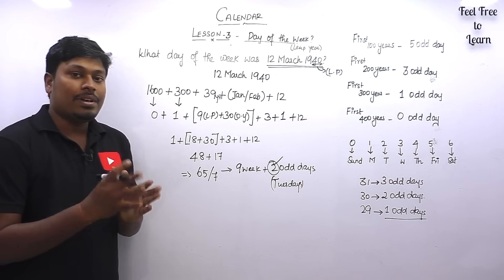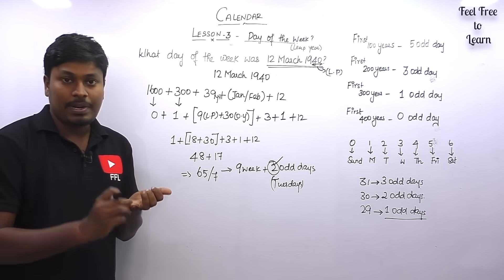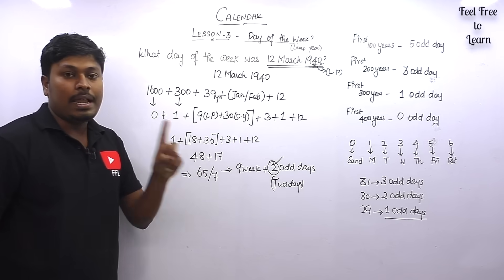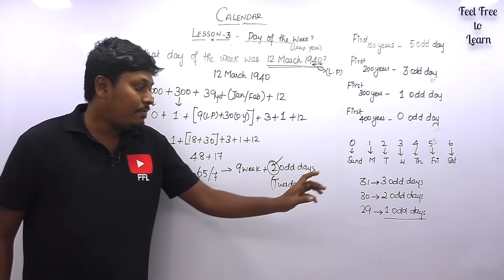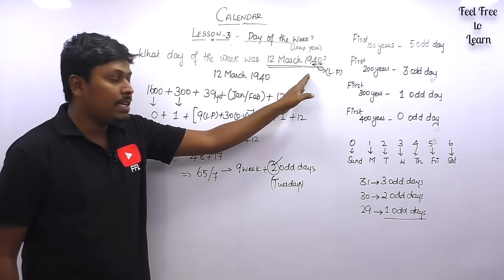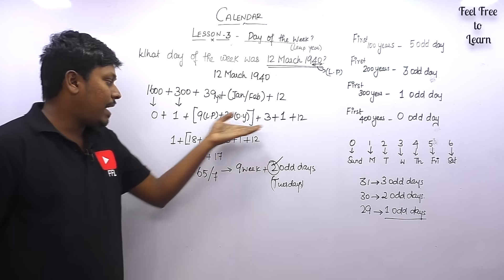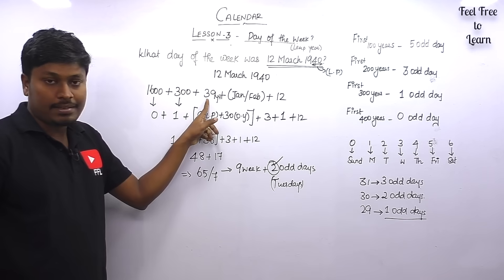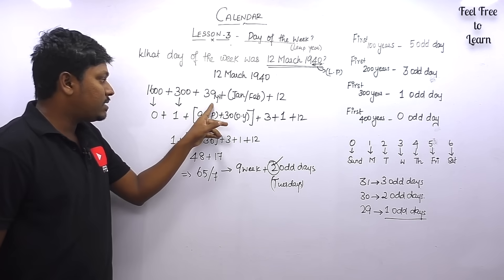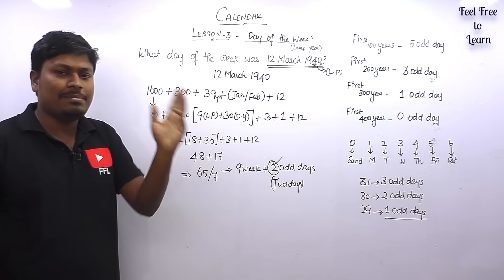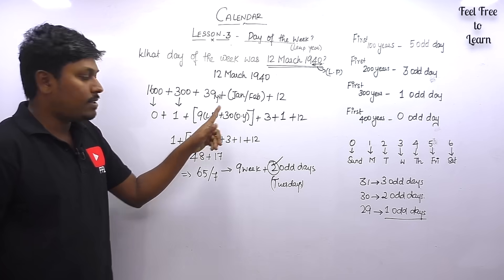Everything is easy if you are strong in the basics. Remember just 3 things: every leap year has 2 odd days, every ordinary year has 1 odd day, every 31-day month has 3 odd days, every 30-day month has 2 odd days, and because of a leap year February has 29 days giving 1 odd day. To find how many leap years are in 39 years, divide by 4: 9 × 4 = 36, so 9 leap years and 30 ordinary years.